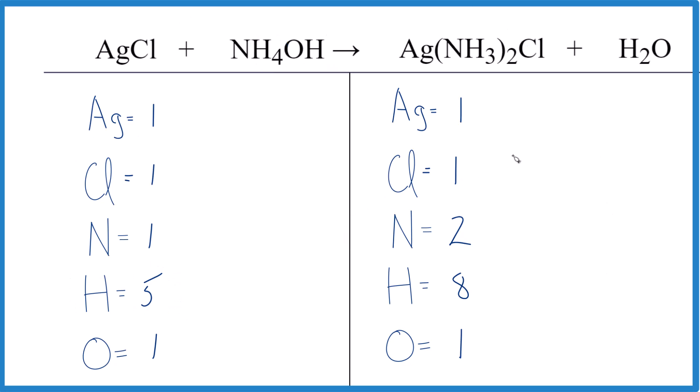And then over here, we have 2 nitrogens. And then for hydrogens, we have 2 times 3, that's 6, 6 plus 2. That's why we have 8 there. So make sure you get those correct first. Otherwise, you won't be able to balance this equation.